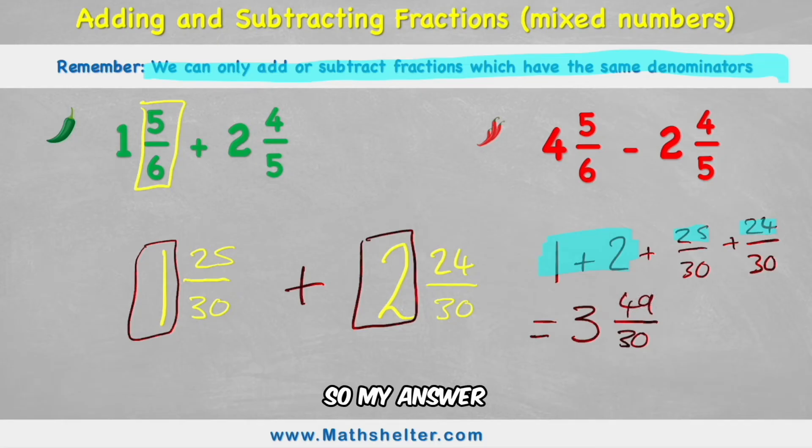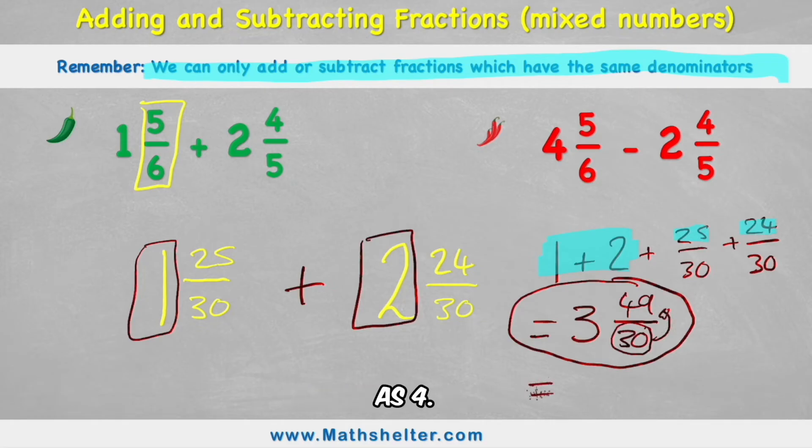So my answer could be 3 and 49 thirtieths. But I'm sure a few wizards in there are going to notice that this is an improper fraction. I have 49 over thirtieths. So if I wanted to be a complete wiz, I will see that there is another whole lot of 30 in my 49, leaving my answer as 4. And then how many were left over? There was 19 left of my thirtieths.